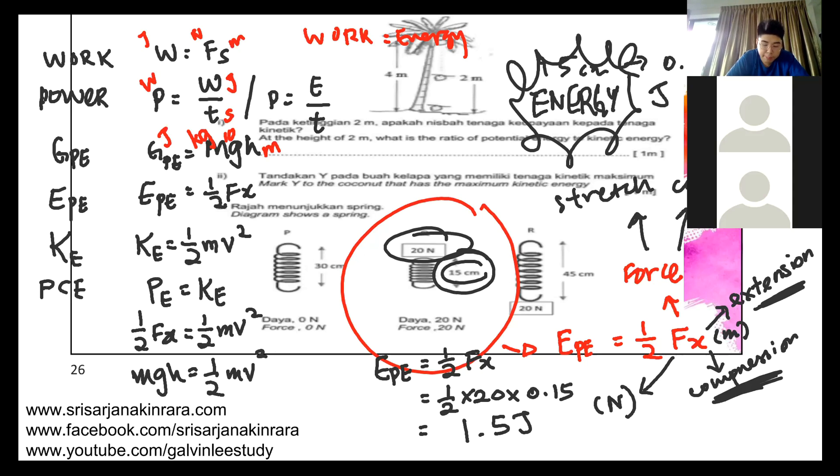EPE, the second type, elastic potential energy, dealing with spring or rubber band when you have extension or compression: half times F times x. EPE again is energy so unit is joules, F unit is newtons, x unit is meters. Then you have kinetic energy, KE.